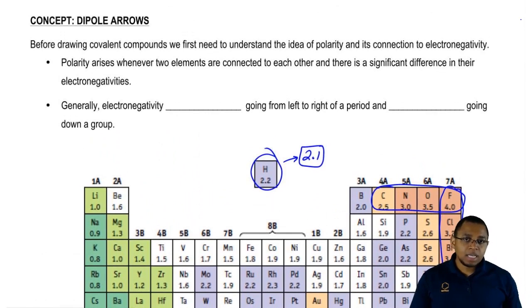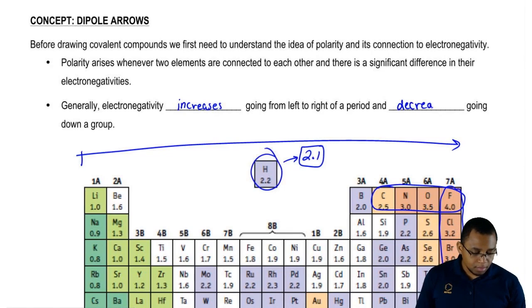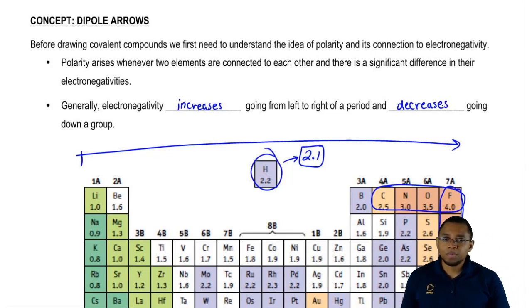Based on what we've seen here on this chart, we notice that the trend is electronegativity increases going from left to right of the periodic table and it decreases going down a group. This makes sense because as we go from left to right, we become more like the non-metals.